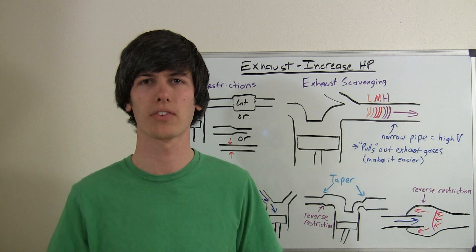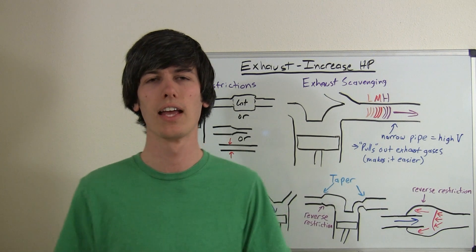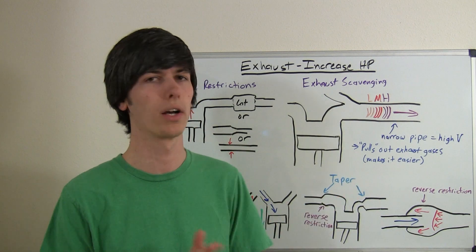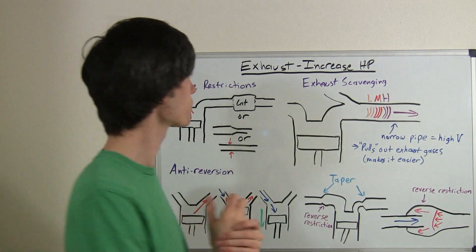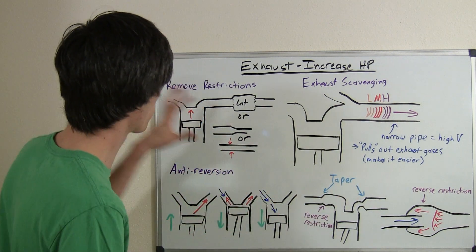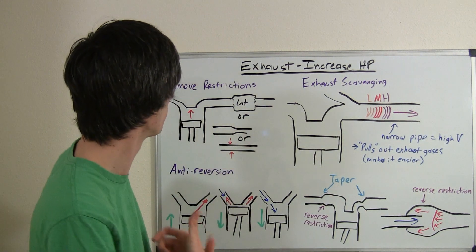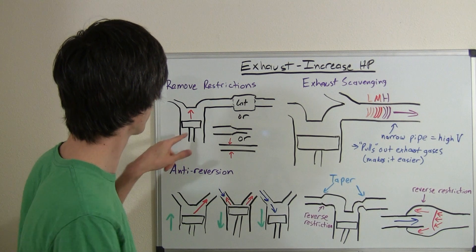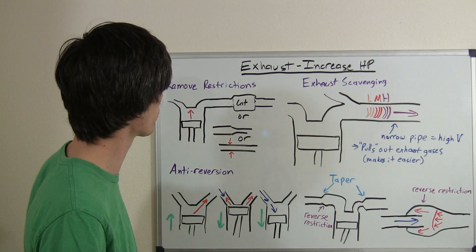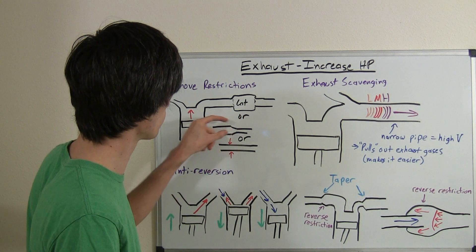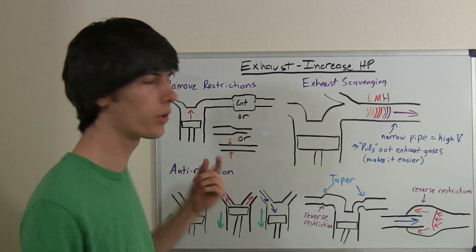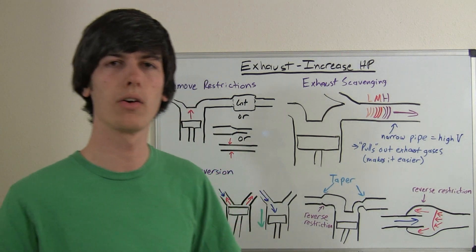So basically the engineering thought process that goes into designing an exhaust and how possibly switching out an exhaust for a different one could increase your horsepower. There's really three things that I'm going to talk about. First off being removing restrictions. So in a typical exhaust you may have something like a catalytic converter or you'll have some little kinks where it tapers down and the exhaust gets smaller or you'll just have a pretty narrow exhaust.